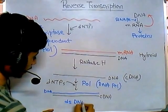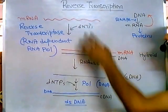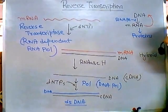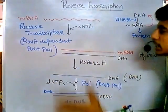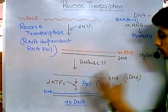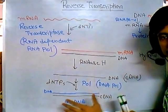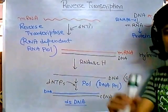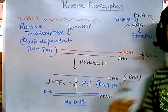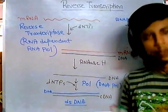Ultimately we obtain a double-stranded DNA where all nucleotides are of the deoxyribonucleotide type. The most important enzyme in this reverse transcription process is reverse transcriptase, an RNA-dependent DNA polymerase. Viruses like HIV use reverse transcription to produce double-stranded DNA from their single-stranded RNA genome, then incorporate this DNA into the host genome, expressing it using host cell machinery to produce infection. I hope that's helpful, guys — thank you.